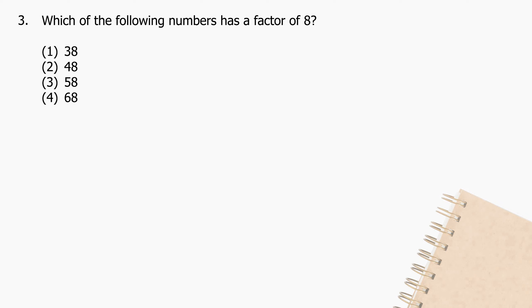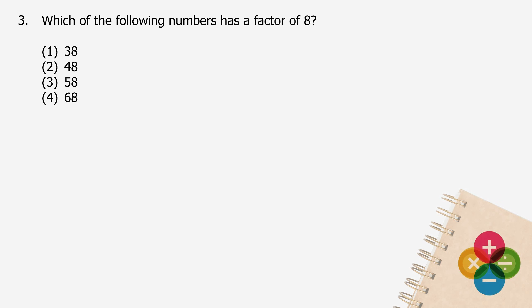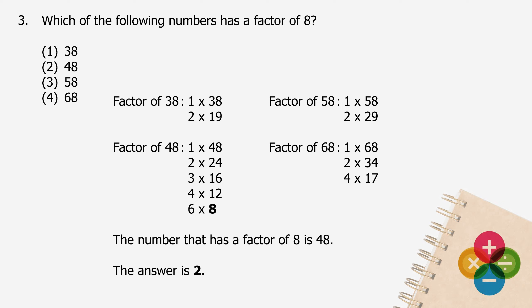Question 3: Which of the following numbers has a factor of 8? The factors of 38 are 1, 2, 19, and 38. The factors of 48 are 1, 2, 3, 4, 6, 8, 12, 16, 24, and 48. The factors of 58 are 1, 2, 29, and 58. The factors of 68 are 1, 2, 4, 17, 34, and 68. The number that has a factor of 8 is 48. The answer is 2.